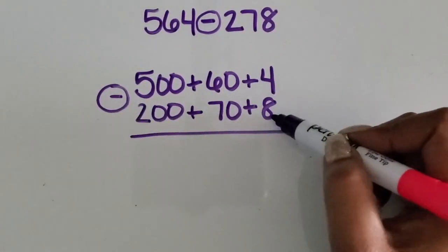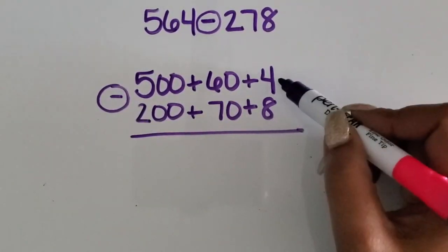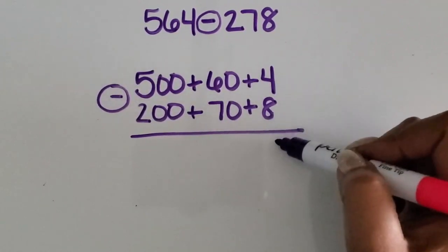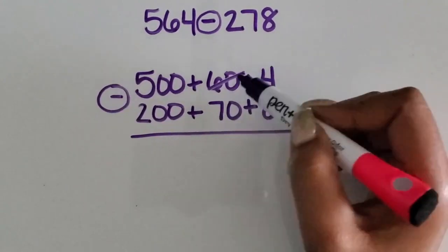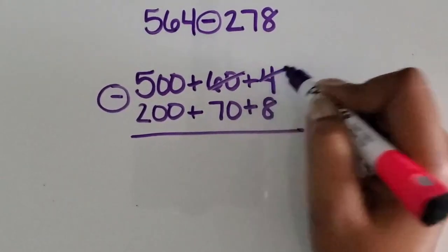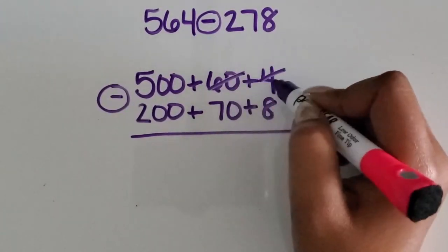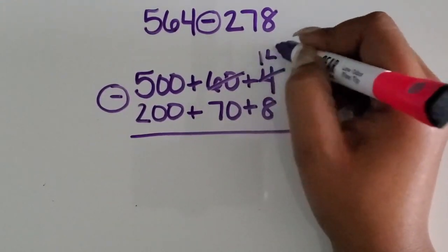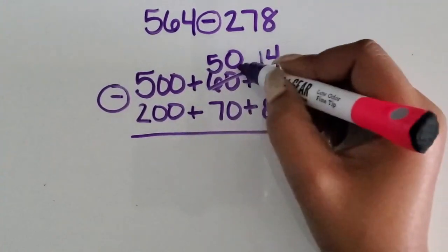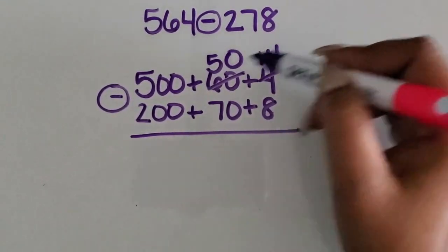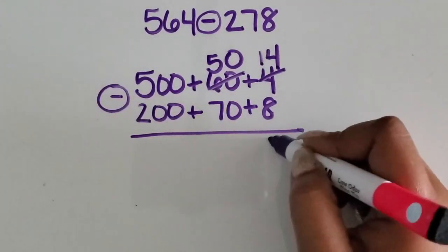So four minus eight. I don't have enough ones to subtract eight ones from four in order to get a positive number, so I'm going to regroup one of the tens. When I trade one of the tens to the ones place, I now have 14 ones, but I only have five tens, which is 50. So 14 minus eight is six ones.